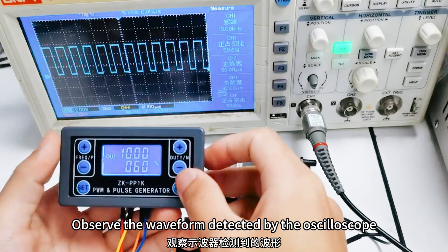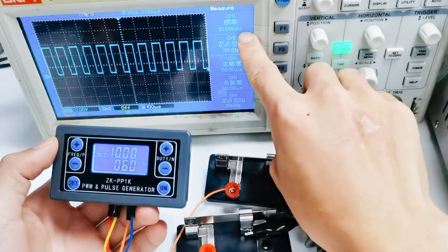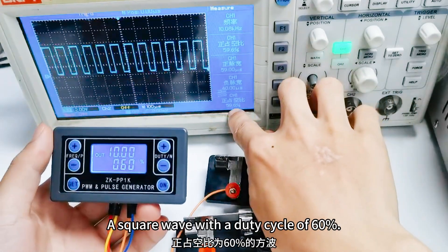Observe the waveform detected by the oscilloscope. The visible frequency is 10 kHz, a square wave with a duty cycle of 60%.